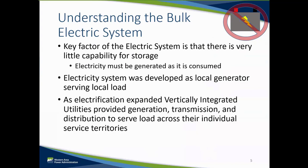So when you flip on a light in your house, a little more generation must be added to the system to compensate for that. When the electrification of the U.S. was first beginning, it was mostly a local generator serving local load in real time. For example, municipalities would own a generator that would generate the electricity needed to operate the street lamps, and the generator and load would be totally independent of any other generators or loads.